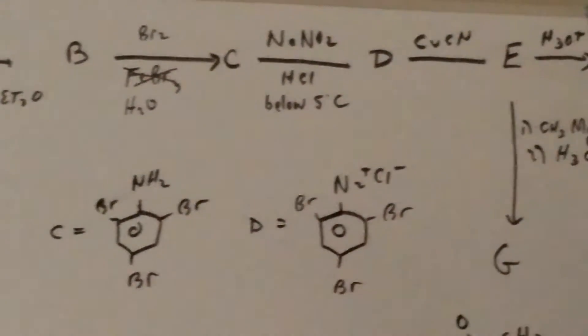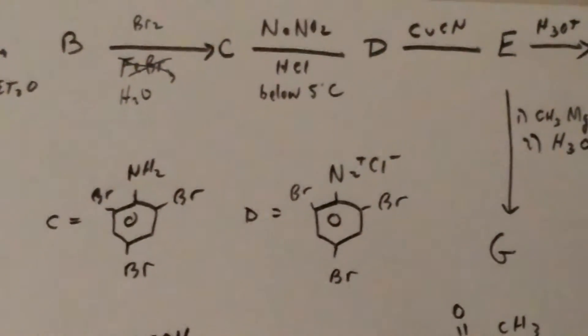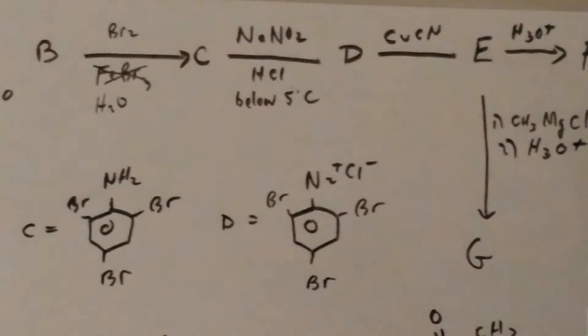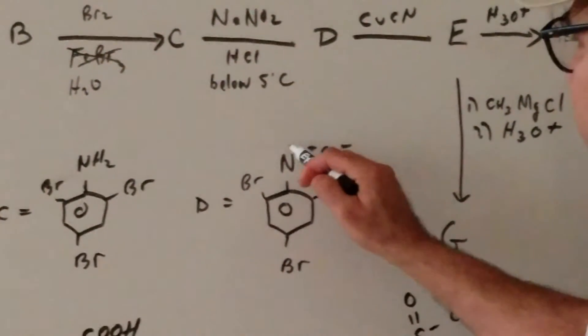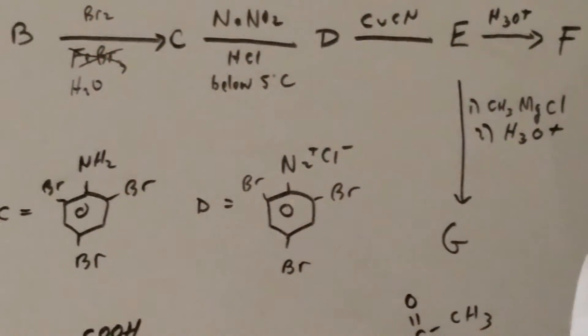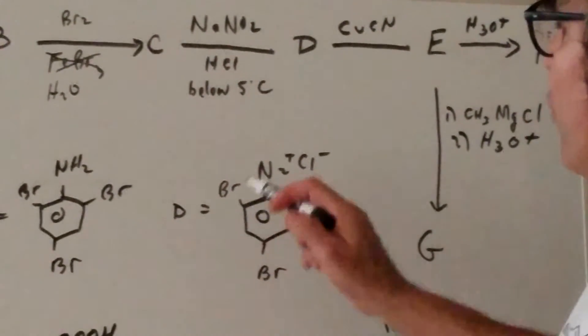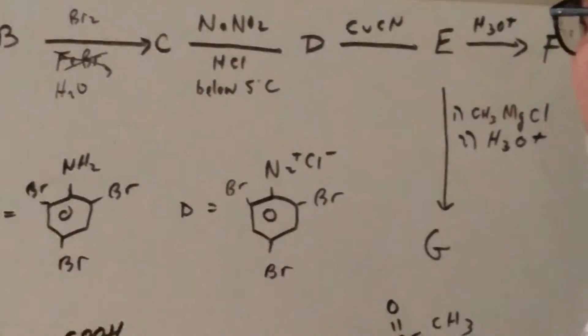We come in with NaNO2 and HCl really cold. That makes what's called the diazonium salt. Notice it says below five degrees because this group is very unstable and we have to work cold.